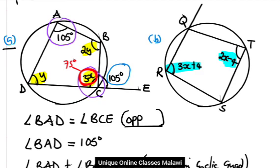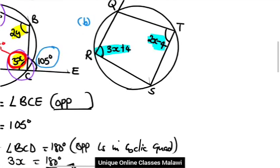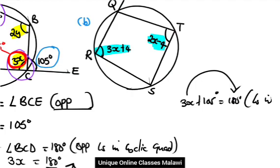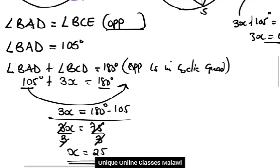You can also apply this: DCE is a straight line, so angles in a straight line add up to 180. You can use this approach or that one, it doesn't matter. We have 3x plus 105 is equal to 180.